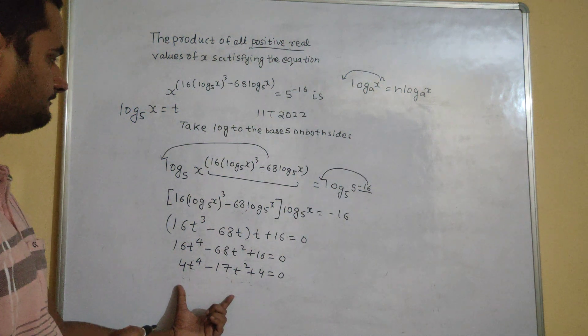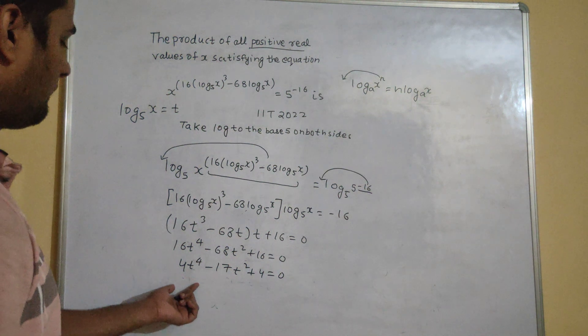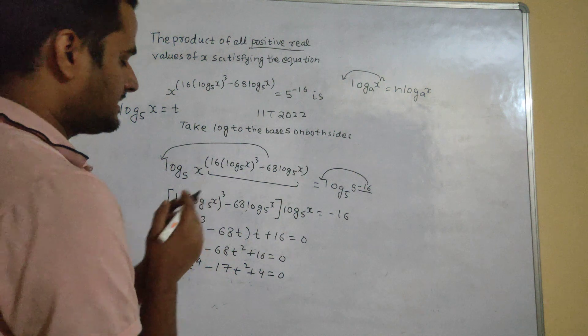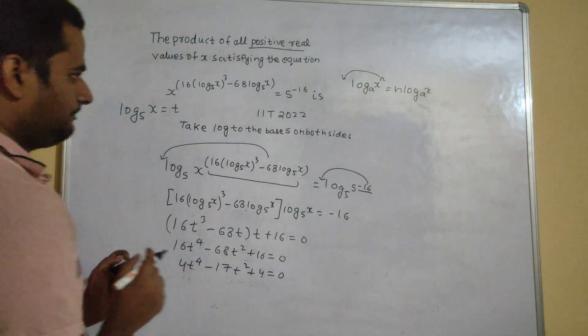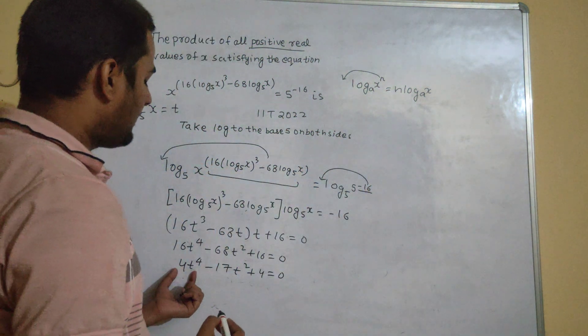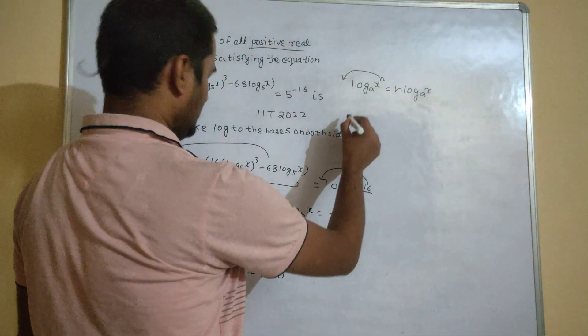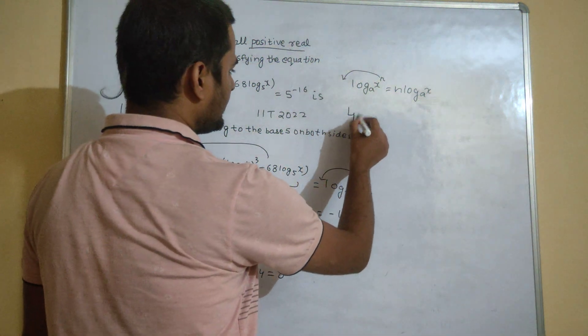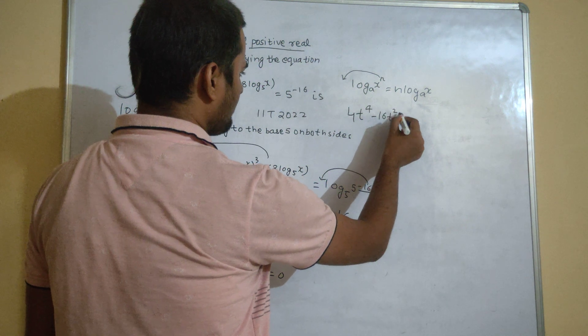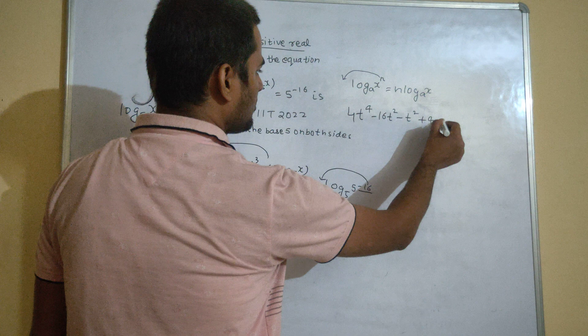So, this is what I am left with. So 4 and 4 is 16, so minus 16. So look at this. I can write this as 4 t power 4 minus 16 t square minus t square plus 4 equals to 0.